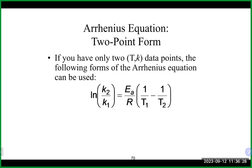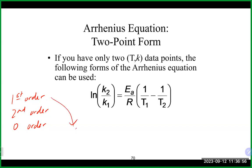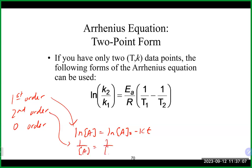Last time we talked about first order, second order, and zero order reactions. Each of these has its own integrated rate law relating concentration versus time. For first order: ln[A] = ln[A₀] - kt. For second order: 1/[A] = 1/[A₀] + kt. For zero order: [A] = [A₀] - kt.